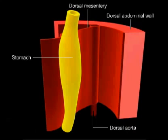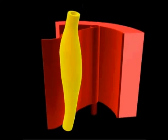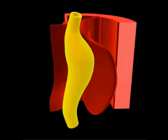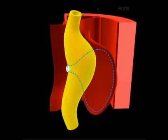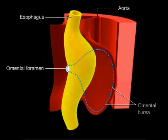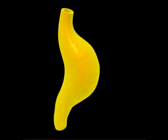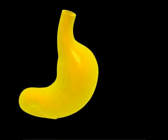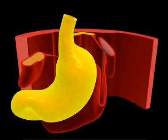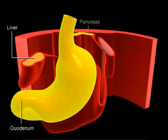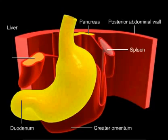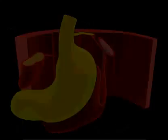The stomach also rotates around its antero-posterior axis, resulting in the caudal end (pyloric part) moving upward and to the right, and the cranial end (cardiac part) moving slightly downward and to the left. Thus, the stomach assumes its final position with its pylorus located superiorly to the left and its cardia inferiorly to the right. The development of the liver begins during the fourth week of gestation.